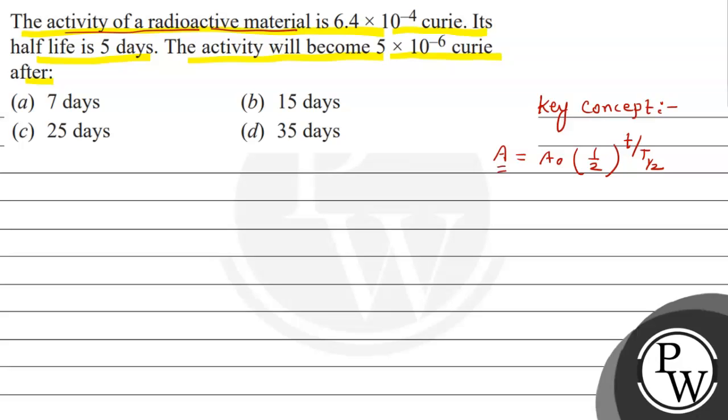That is activity at particular time t. This is the previous activity, 1 by 2, and in how much time the activity will happen, that is small t, and this is half life capital T 1 by 2.